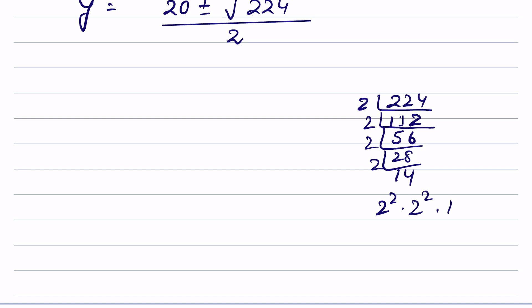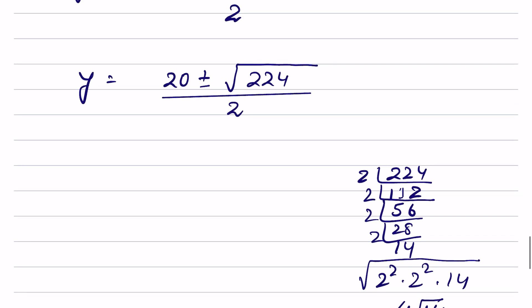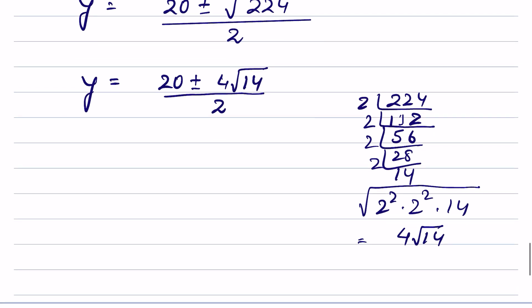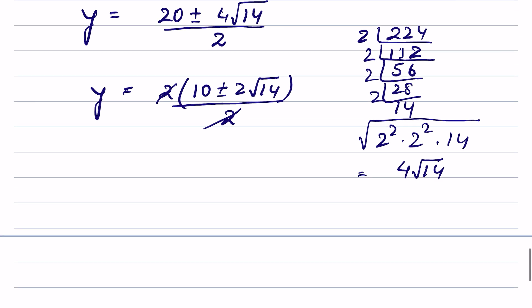Grouping the factors, the square root of 224 equals 4 times the square root of 14. So y equals (20 plus or minus 4 times square root of 14) over 2. Taking 2 as common from the numerator gives 2 times (10 plus or minus 2 root 14) over 2, and the 2s cancel. So one value of y is 10 plus 2 times square root of 14, and the other is 10 minus 2 times square root of 14.